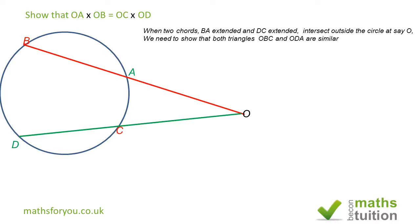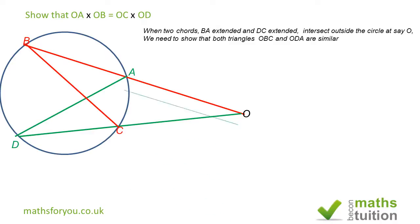We need similar triangles in order to show that OA times OB is equal to OC times OD. We get our similar triangles by joining B to C and D to A, so we now have two triangles — one in red and one in green — which are triangles OBC and triangle ODA.